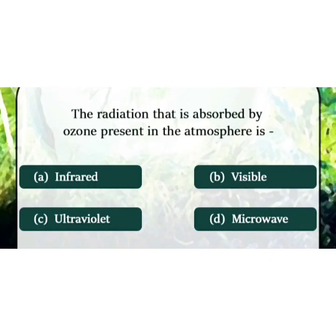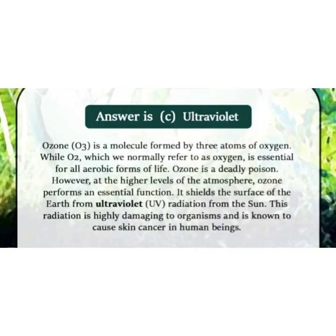Next question: the radiation that is absorbed by ozone present in the atmosphere is — in exams, please read both the options and the questions carefully, and don't get confused. The right answer is option C, ultraviolet. Please read the details below carefully so your concept becomes clear.